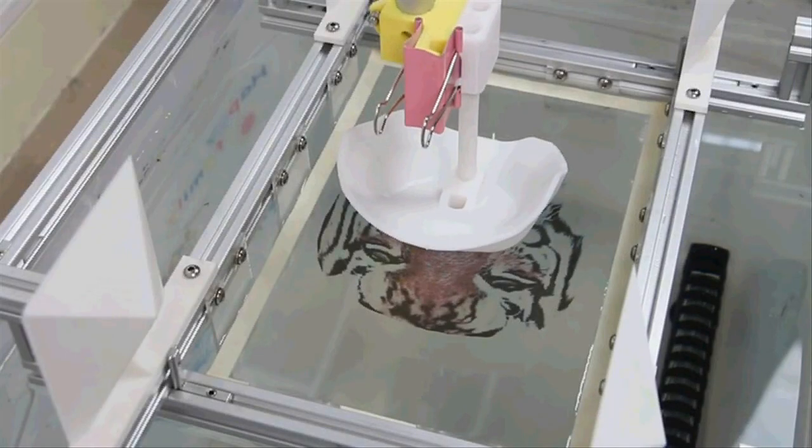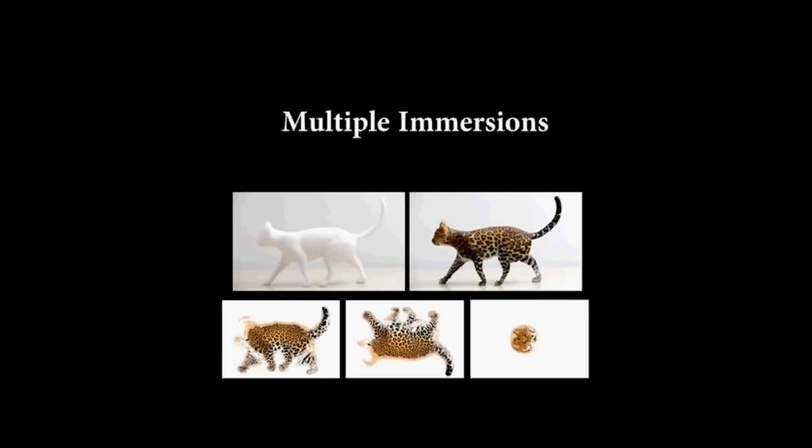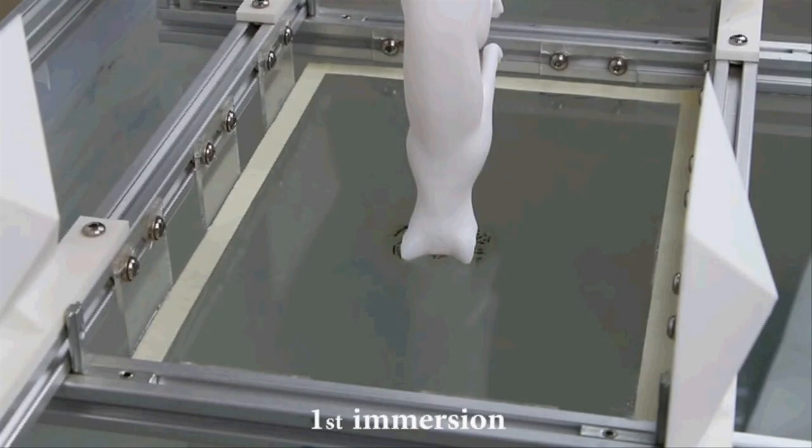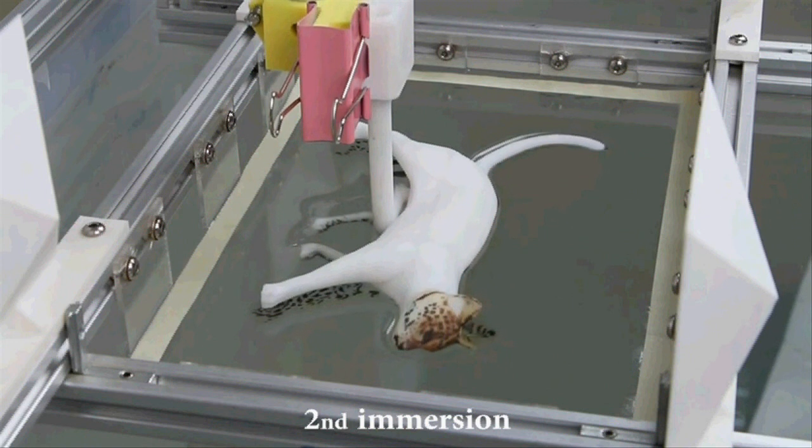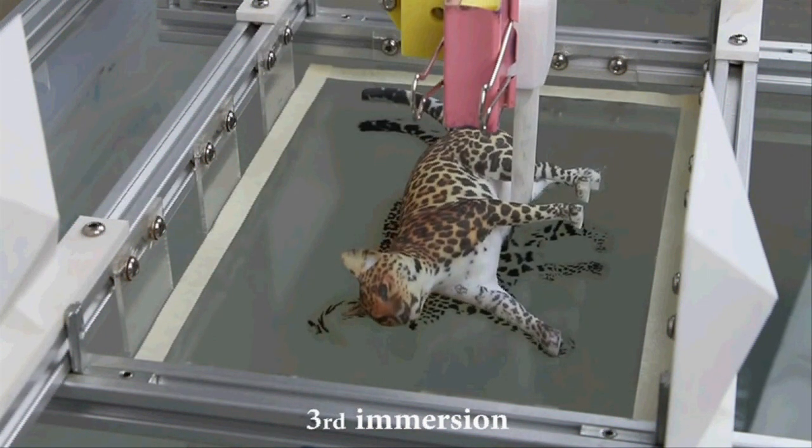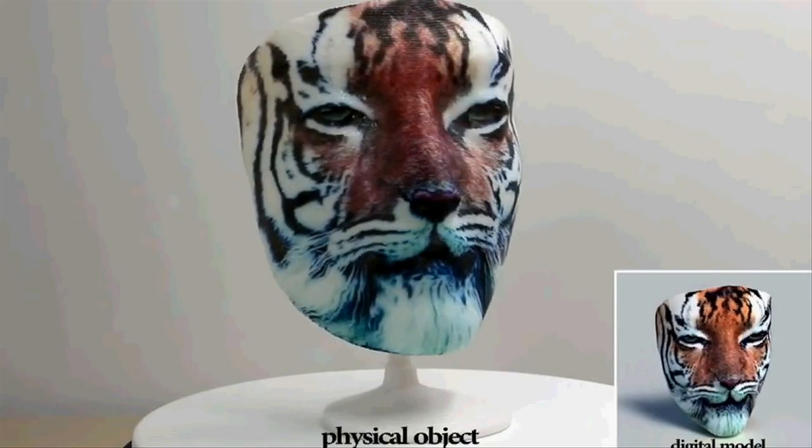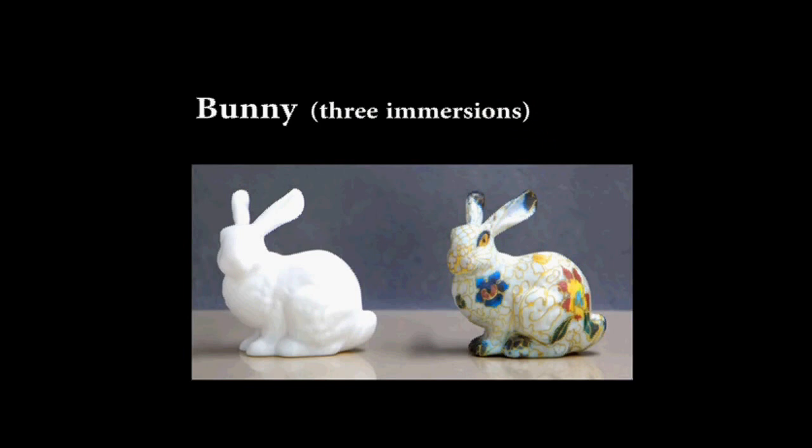When dealing with complex surfaces, the team has extended their method to enable multiple immersions, each with a different object orientation. The combined colors of individual immersions form a desired texture on the object surface. This new method is cost-effective and can be used on a range of materials, from plastic to porcelain.